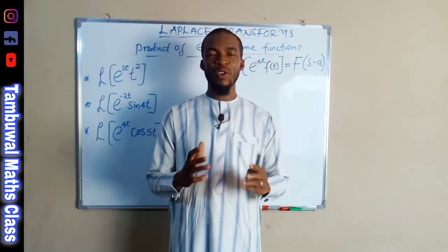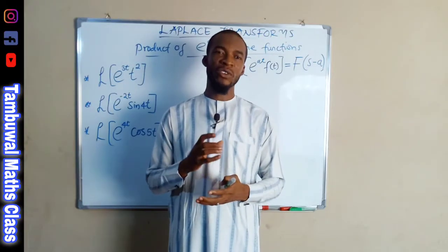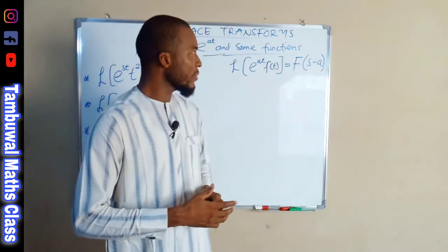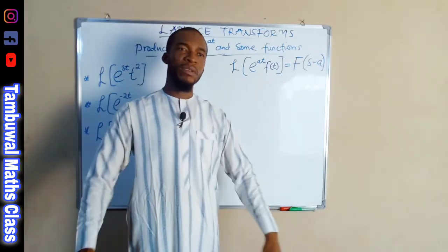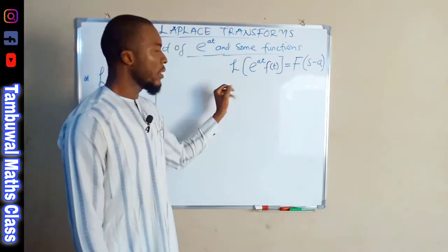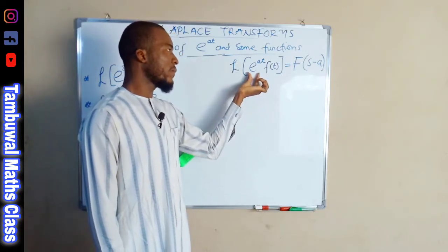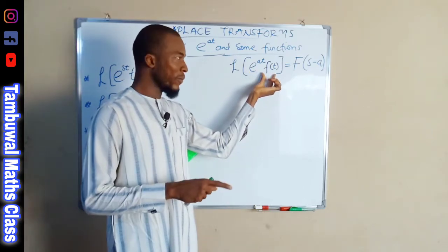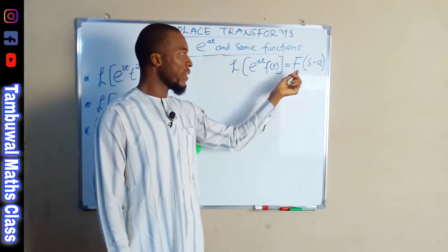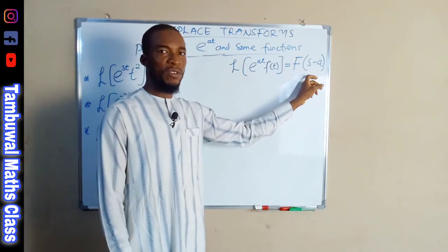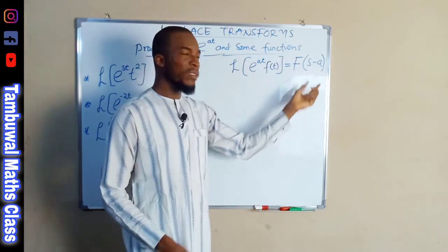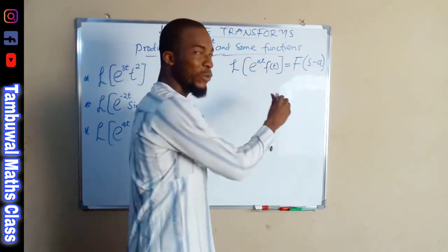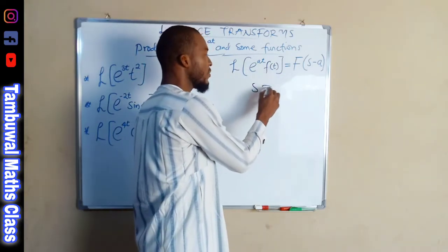In today's tutorial we are going to look at how we can find the Laplace transform of the product of a real exponent with some function. This formula will guide us: if we are asked to find the Laplace transform of the product of an exponent e^(at) with a function f(t), the result will be in the form F(s minus a). To find F(s minus a) you take the Laplace transform of f(t) then substitute s with s minus a.